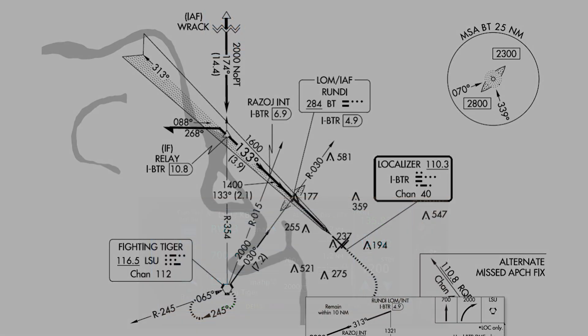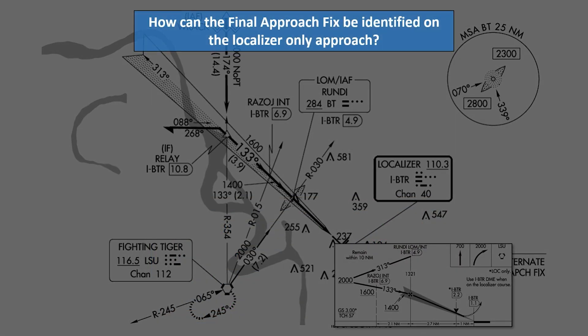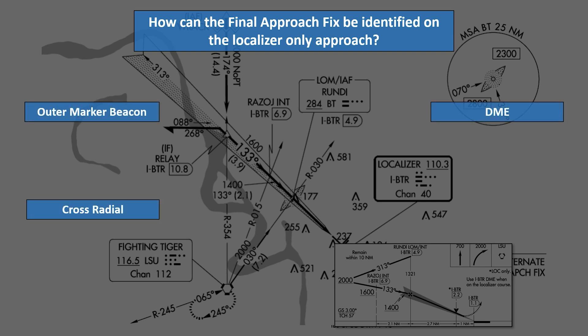For the next question: how can the final approach fix be identified on the localizer-only approach? By the outer marker beacon, DME, cross-radial, or all of these?